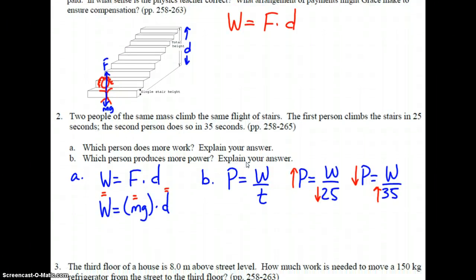Onward to number two. Two people of the same mass climb the same flight of stairs. The first person climbs the stairs in 25 seconds. The second person does so in 35 seconds. A. Which person does more work? Explain your answer. And B. Which person produces more power? Explain your answer.